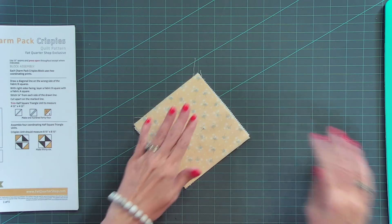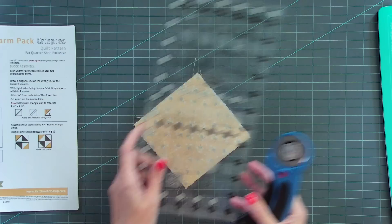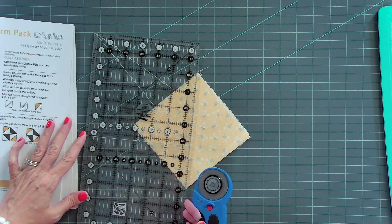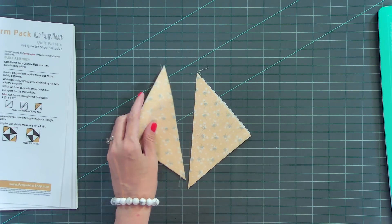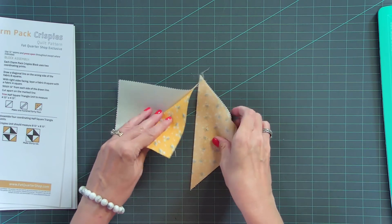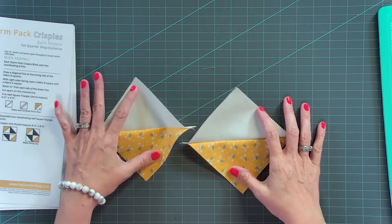When you get back, it's gonna look like this. So I'm gonna just cut in the center, corner to corner. And each of those pair of squares is going to give you two half square triangles.